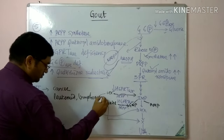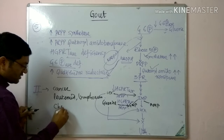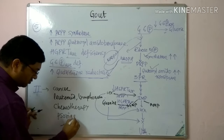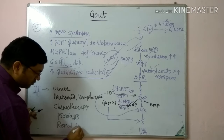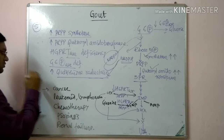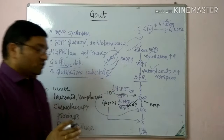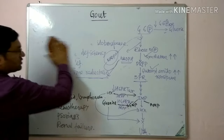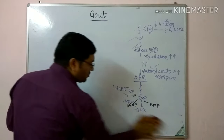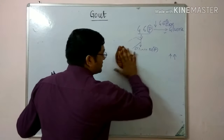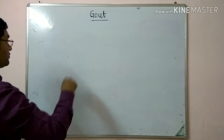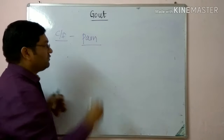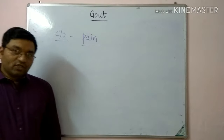Secondary gout is due to causes that do not directly affect purine nucleotide metabolism. The secondary causes include mainly cancer — leukemia and lymphoma — cancer chemotherapy, psoriasis, and renal failure. These are the important secondary causes of gout.